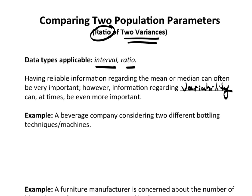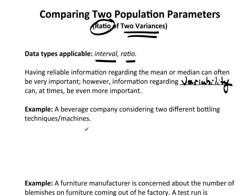Let's take a look at conceptually an example here. Suppose you have a beverage company and you're considering two different types of bottling techniques, two different machines. Suppose this is your number line and suppose right here is your target number of ounces that you want to be bottling.